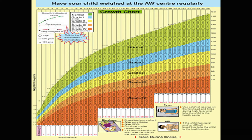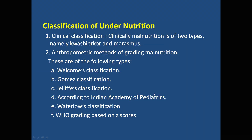Once these parameters are measured, they are displayed on what is called a Road to Health card or growth chart card. This has weight in kilograms on the Y-axis and age in months on the X-axis, typically from birth up to the third year, showing the child's weight over time. It displays different color-coded grades of nutrition from normal to grade one, grade two, grade three, and grade four malnutrition, and also shows height.